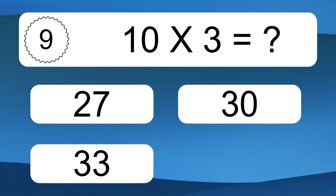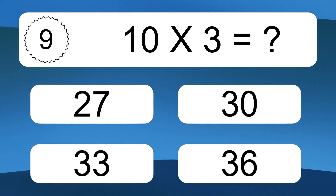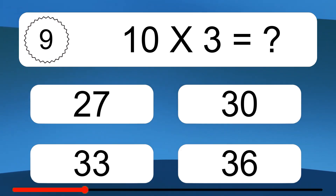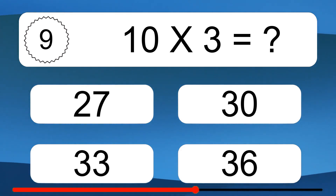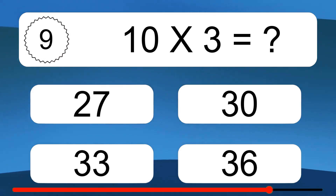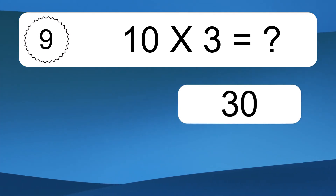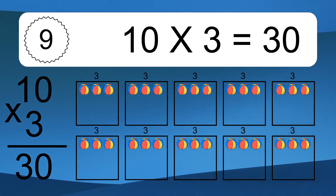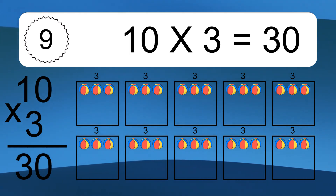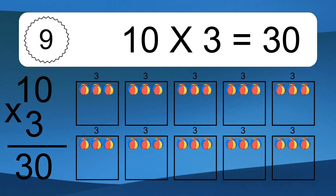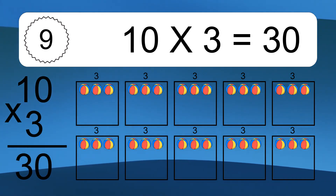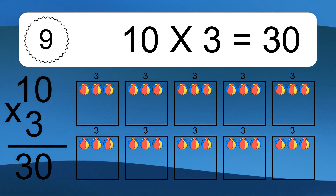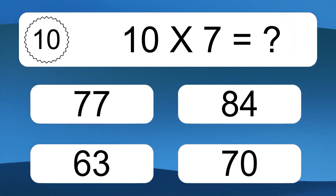10 times 3 equals what? 10 times 3 equals 30. We have 10 boxes, and each box has 3 colorful balls inside. If you count all the balls in all the boxes together, you will have 10 times 3 balls. This equals 30 balls. 10 times 7 equals what?